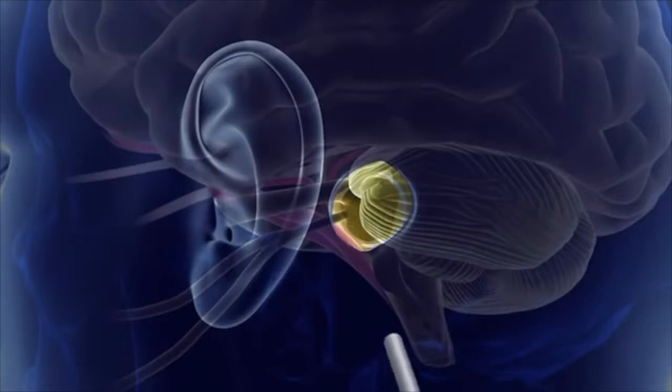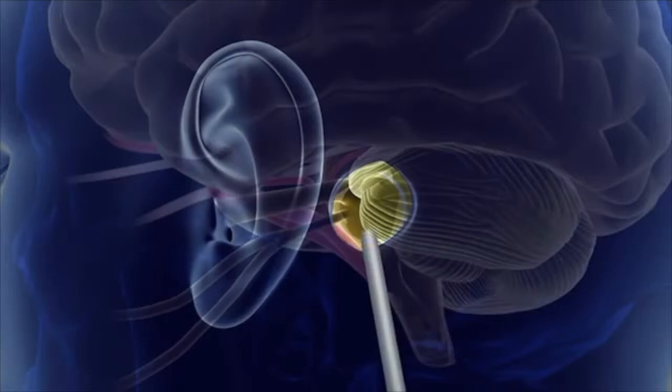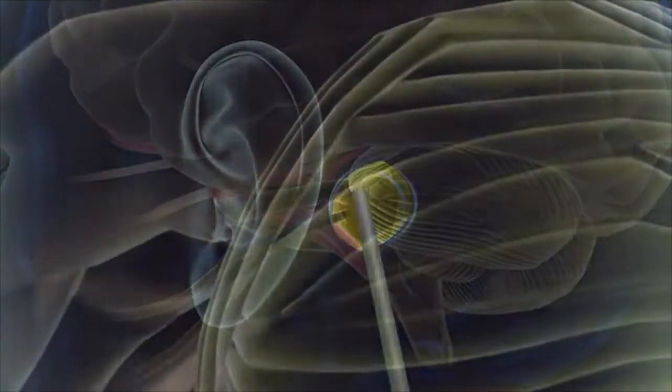The neurosurgeon advances a tiny endoscope along a narrow passageway between the back of the brain, called the cerebellum, and the bone of the skull base, called the petrous temporal bone.